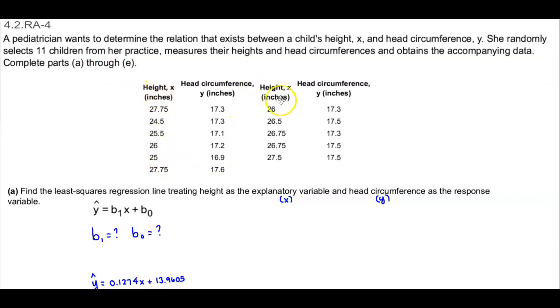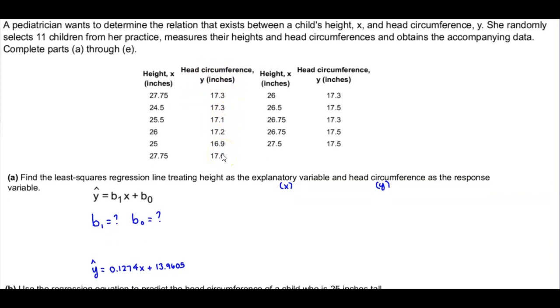So here we can see what the data represents. We have height, which is the first column, which is the variable X in inches, and then our second column is the head circumference, which is the variable Y, which is also in inches. Now the first thing we want to do is find the least squares regression line, treating height as the explanatory variable, which is X, and the head circumference, which is Y, as the response variable.